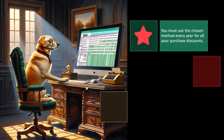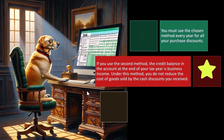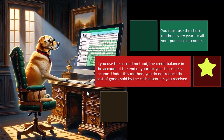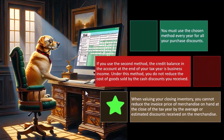You must use your chosen method every year for all your purchase discounts. Consistency is the principal concept here — it's a general rule. Without consistency in tax accounting, people might use different methods to manipulate when income is earned to lower taxes. If you use the second method, the credit balance in your account at the end of the tax year is business income. Under this method, you do not reduce the cost of goods sold by the cash discounts you receive, and you cannot reduce the invoice price of merchandise on hand by an average estimated discount.